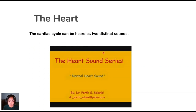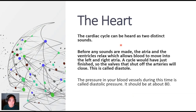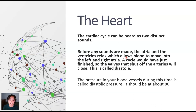There's a video in the support content of our OneNote. The cardiac cycle will be heard as two distinct sounds. Before any sounds are made, the atria and the ventricles relax, which allows blood to move into the left and right atria. Our cycle would have just finished, so the valves that shut off the arteries will be closed — this is called diastole. The pressure in your blood vessels during this time is called diastolic pressure, and it should be about 80.